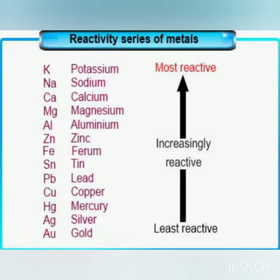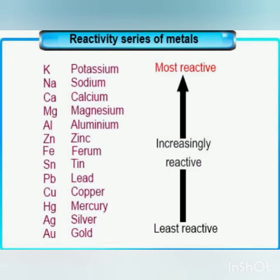Now, open page number 45 — the reactivity series is given in your books, and you can also see it in the slide. In the reactivity series, potassium is placed on top, followed by sodium, calcium, magnesium, aluminium, zinc, and at the bottom are silver and gold. The metals are arranged in order of decreasing reactivity. Potassium is the most reactive, and silver and gold are the least reactive metals, which react very slowly or not at all.